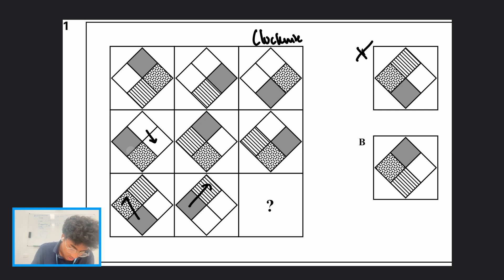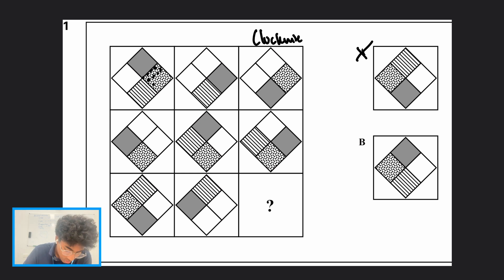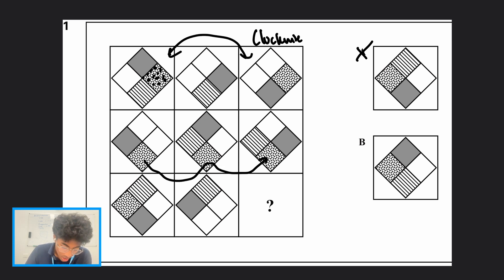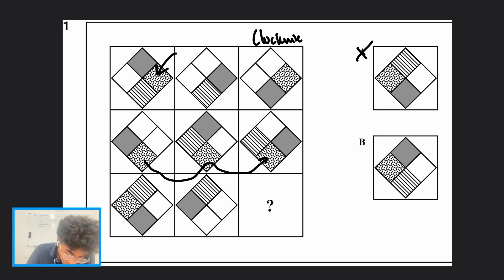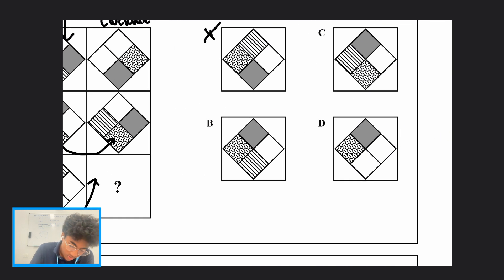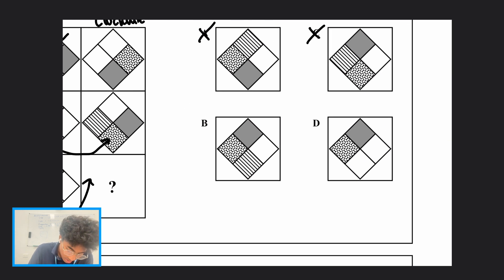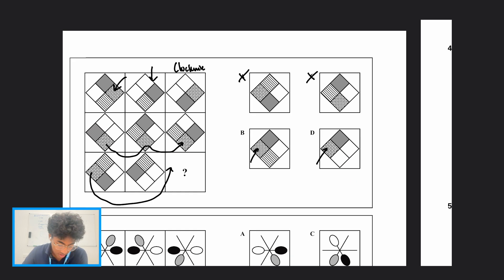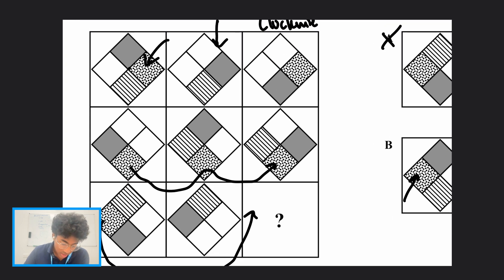Now let's look at the shape with all the dots — the polka-dot square. This square is the same in the first and third images; it doesn't move. The reason we can't see it in the second image is that the gray square goes on top of it. So this polka-dot square stays in the same position forever, meaning it must appear in the top-left in our mystery image. This lets us cross out option C.